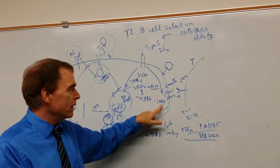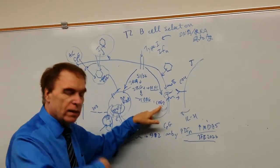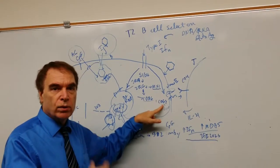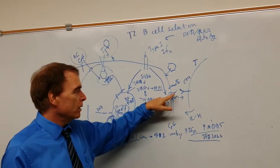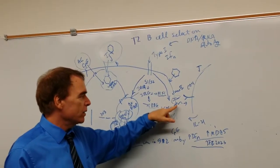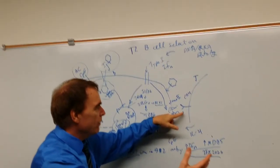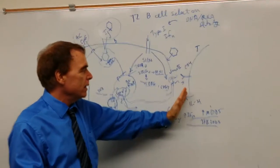It upregulates CD69, which causes the B-cells to leave the marginal zone and go into the follicle. Between upregulating the costimulatory molecules and maybe class 2, and bringing them into the follicle, they're in a position to stimulate the T-cells.